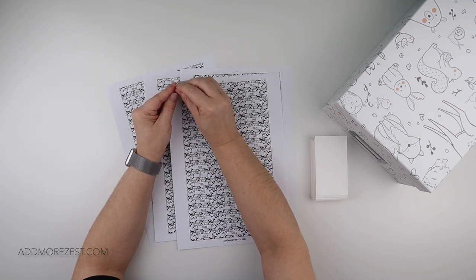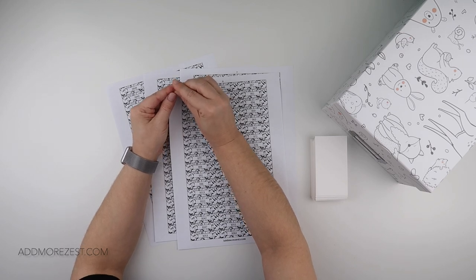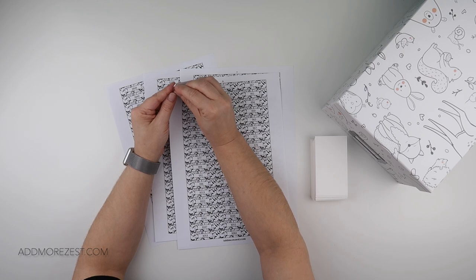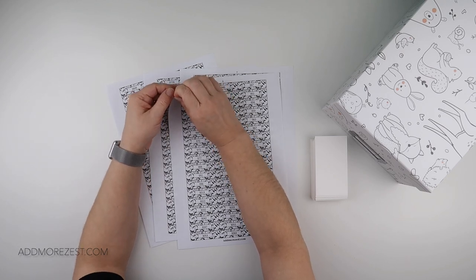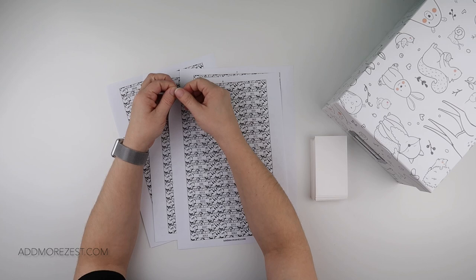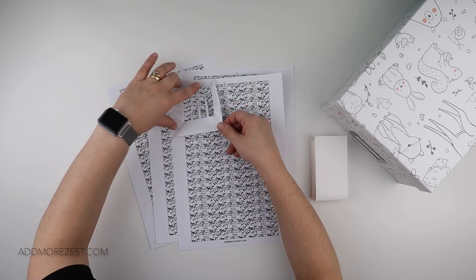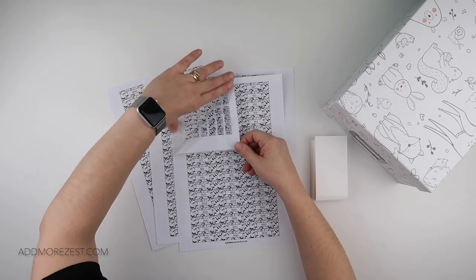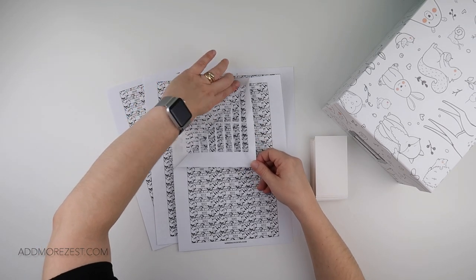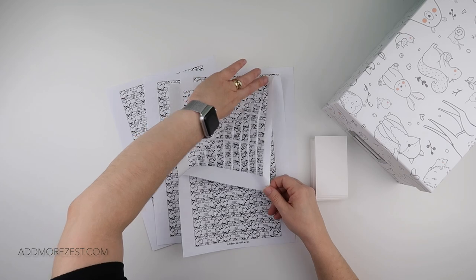If you get hold of the corner of the sticker sheet—now sometimes it is easier to actually take one sticker off and then grab hold of the sticker sheet from there—but if you get hold of it and peel it back, try to make sure that you don't let go so it doesn't land back on the sticker sheet.